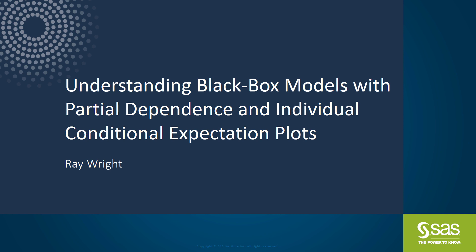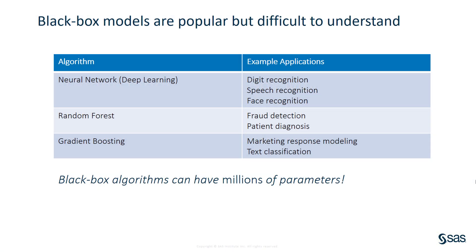These are modern machine learning models that are so complicated that they have earned the nickname black box models. Modern machine learning algorithms such as neural network, random forest, and gradient boosting are capable of discovering complicated interactions and nonlinearities in data. They have been shown to provide accurate predictions in a wide range of domains, from digit recognition to diagnosis of illness. But because these black box models can have thousands, even millions of complicated parameters, humans cannot easily understand them without help.